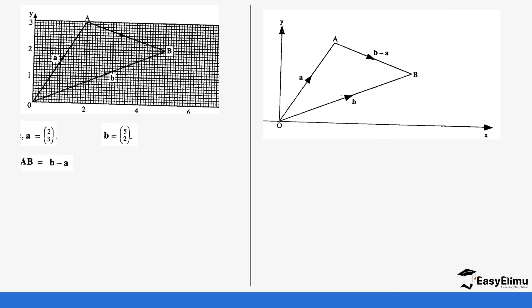So we know that if you look at OA, you can see if we move from vector OA, it's going to be two steps on the x-axis, so 2, and three steps on the y-axis, so 3. And then OB is going to be five steps on the x-axis and two steps on the y-axis, so 5, 2. So those are our position vectors of A and B.